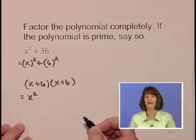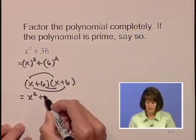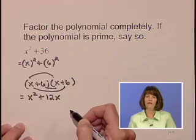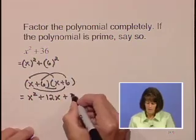foiling, gives x squared plus 6x plus 6x, which gives us a 12x as a middle term. And 6 times 6 is 36.